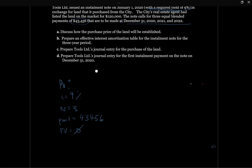Normally, with bonds payable, in the future we'd have to pay back the face amount of the bond. Whereas with an installment note, we're paying back the note in equal blended installments. If we put all these numbers into our financial calculator and compute present value, we get the present value equal to — let's round it — $110,000.